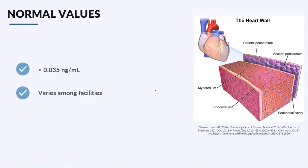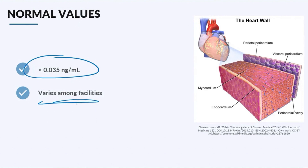Before we get started on the ins and outs of troponin, it's really important to understand what the normal value is. The normal value is going to be less than 0.035 nanograms per milliliter. Different labs are going to have different troponin assays or tests, and the normal values are going to vary. You need to figure out what normal is where you're at, so whatever the facility says and where that cutoff is. For all intents and purposes, you should consider anything greater than 0.35 as an elevated level.